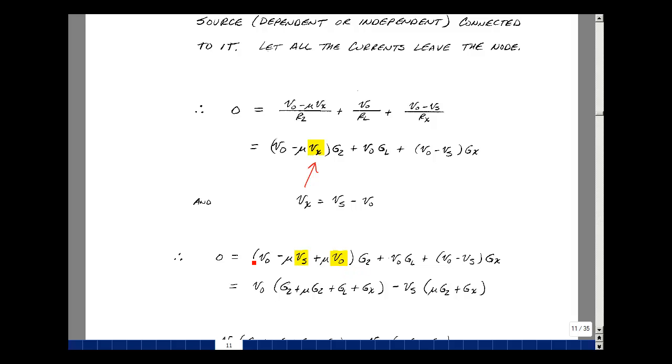Group all the things that multiply V0 together. So I have G2 times V0. I have G2 times mu V0. And I have G sub L times V0. And I've got G sub X times V0. All the things that multiply V sub S: here I've got a minus mu times G2, and then here I've got a minus G sub X. I'll bring that minus sign out in front just as mu G2 plus G sub X.